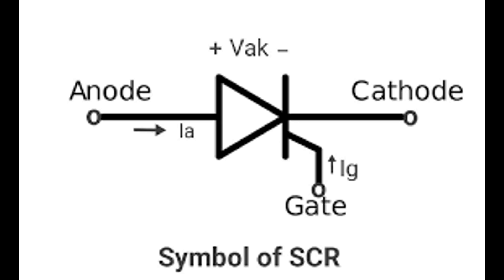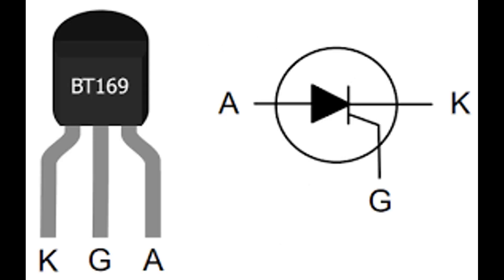Reverse blocking mode: when a negative voltage is applied to the anode relative to the cathode, junctions J1 and J3 are reverse biased and J2 is forward biased, preventing current flow. Summary: Anode (A) connected to the outermost P-layer; Cathode (K) connected to the outermost N-layer; Gate (G) connected to the inner P-layer next to the cathode. The precise arrangement of these layers and junctions allows the thyristor to function as a controlled switch, capable of handling high voltages and currents with precise triggering via the gate terminal.